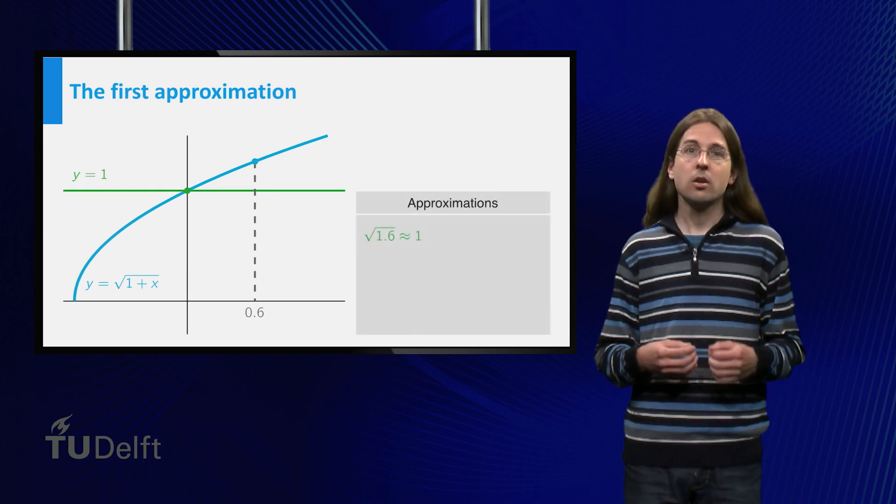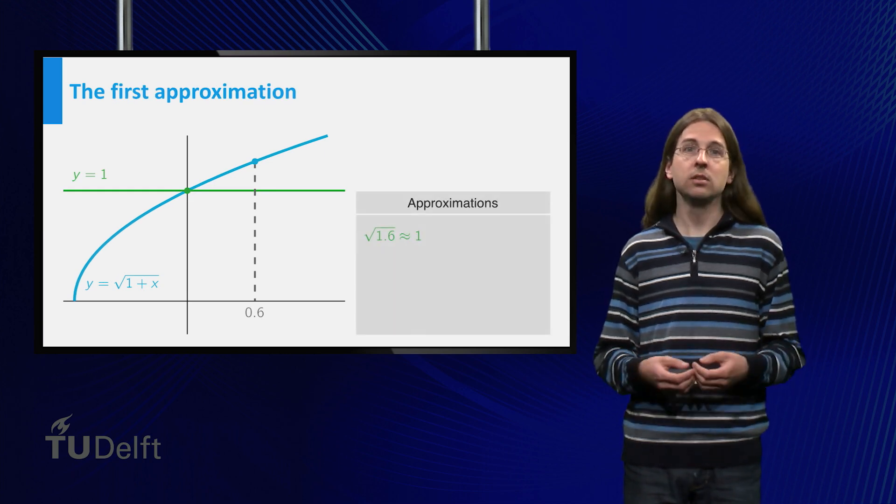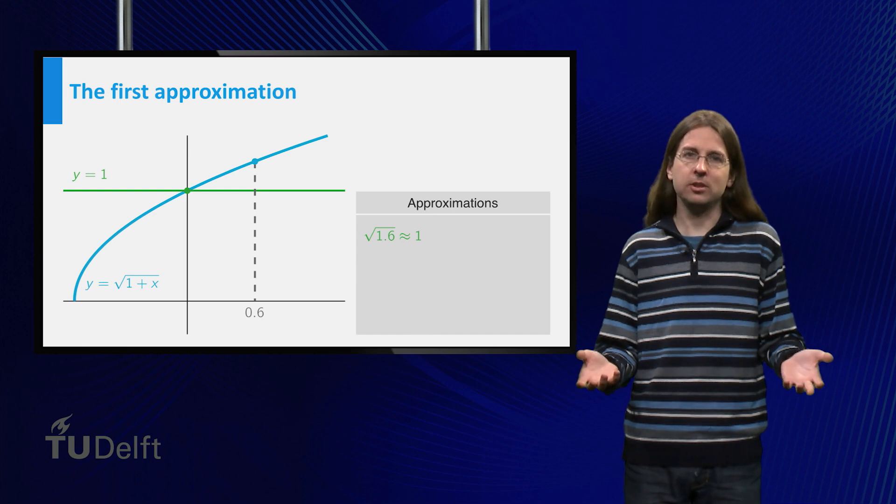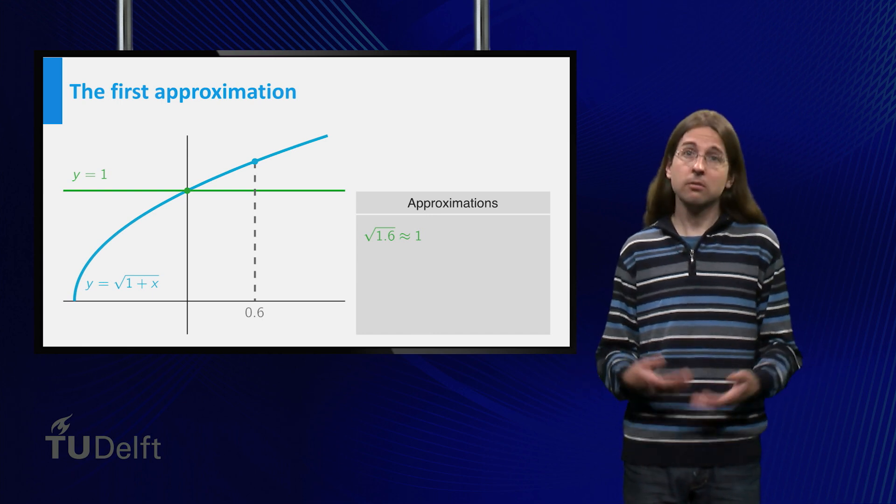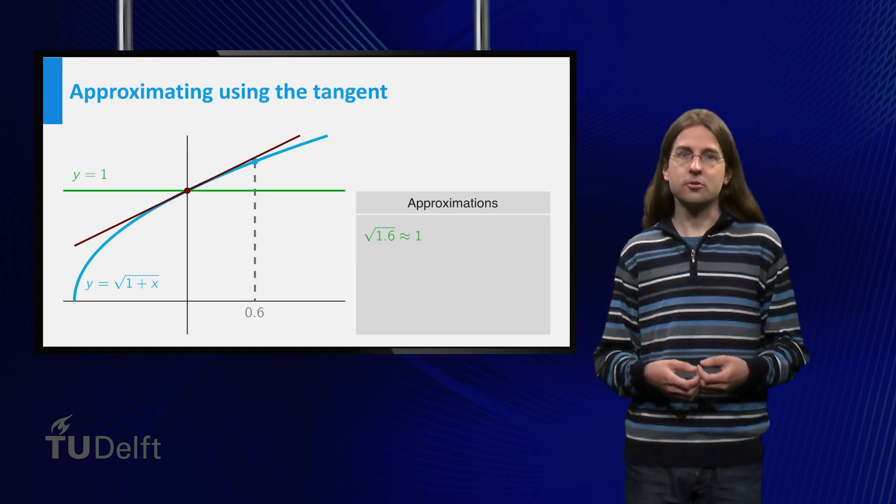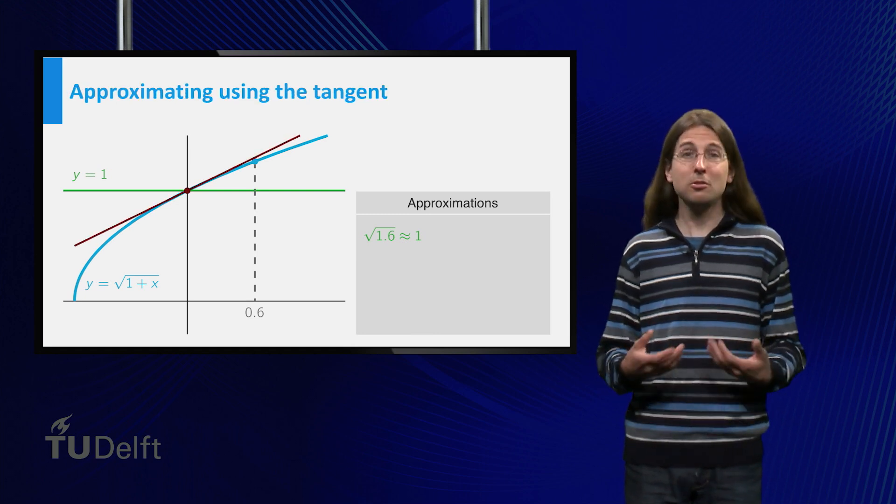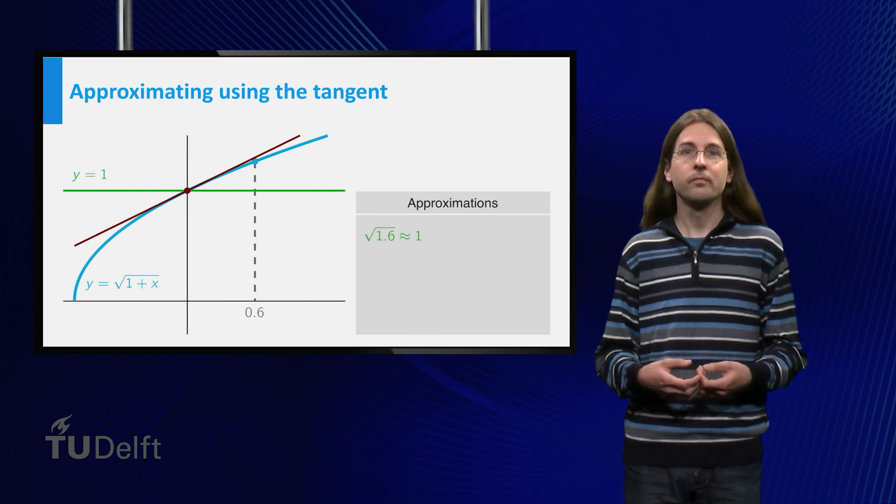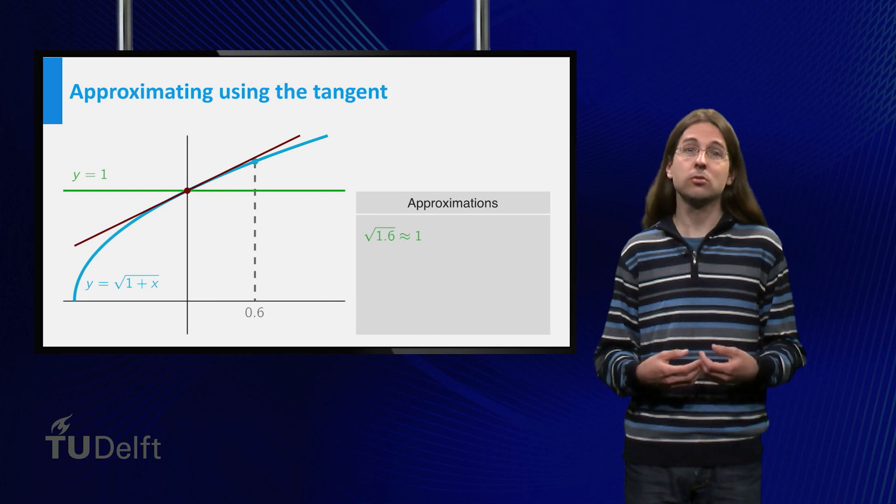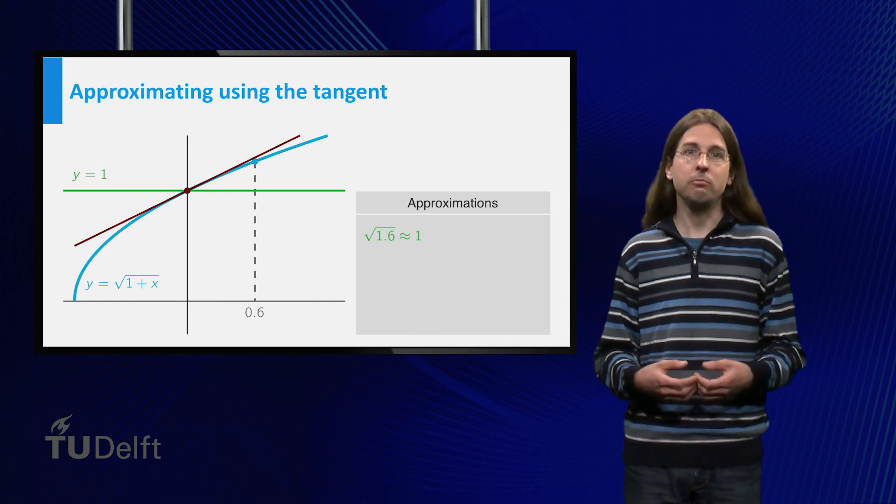In essence, we are approximating the graph of the function with a horizontal line at height 1. Can we find a better approximation of the graph near x equals 0? Well, there is of course the tangent line. The tangent line is a straight line which is tangent to the graph at x equals 0. If we draw this line, you see that it is a better approximation to the graph than the horizontal line we drew before.